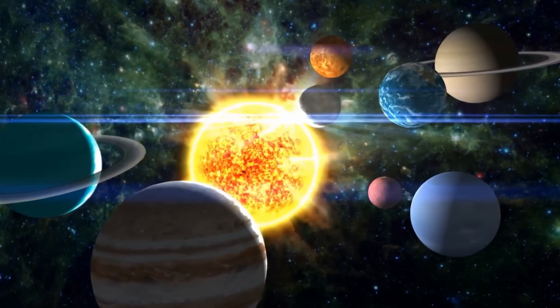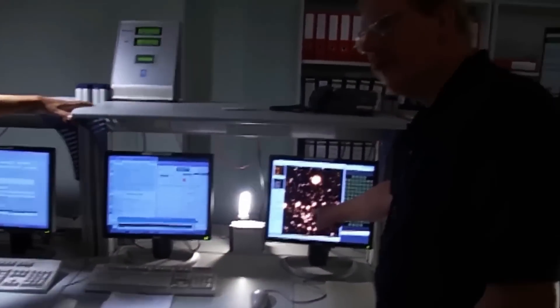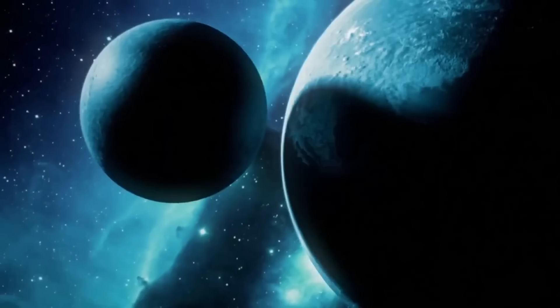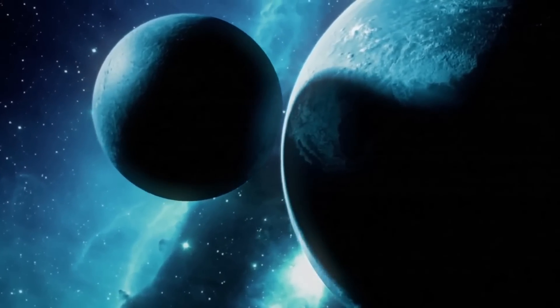Take the TRAPPIST-1 system, for example. It features a dim red dwarf star and seven rocky planets, much like Earth, orbiting around it. Out of these, three are thought to be in the habitable zone, which means they could have liquid water on their surfaces.